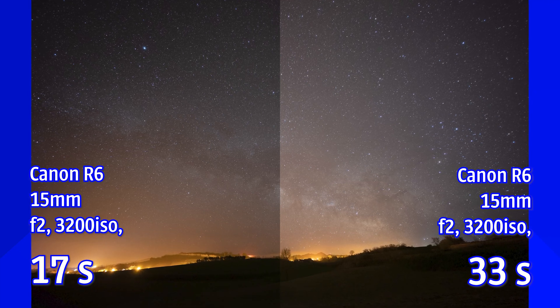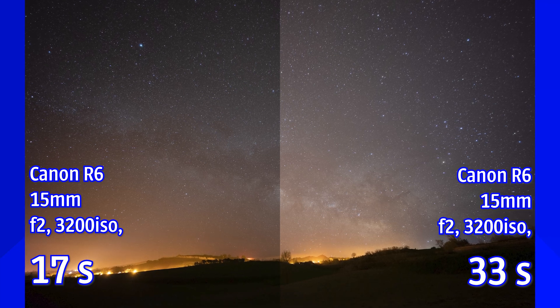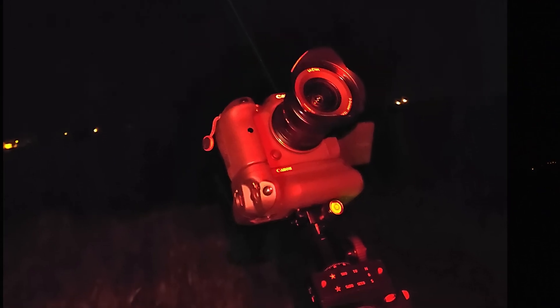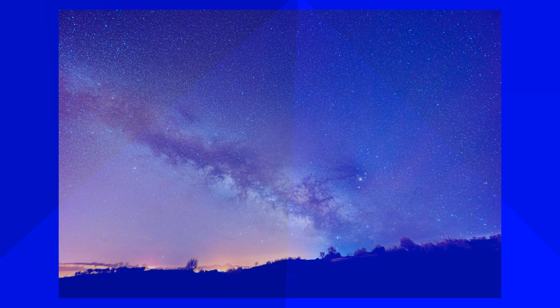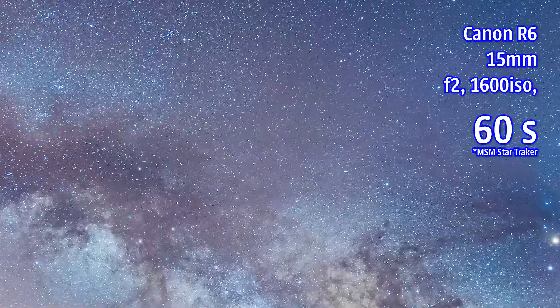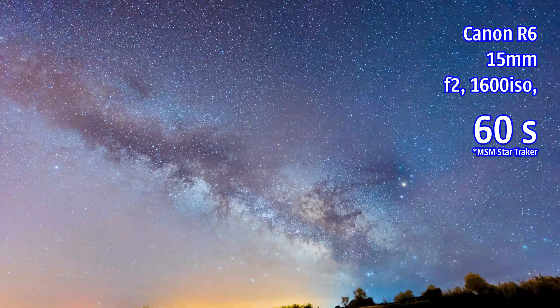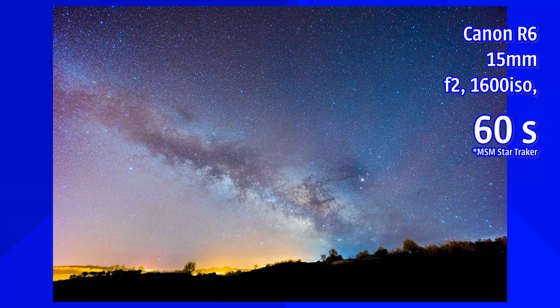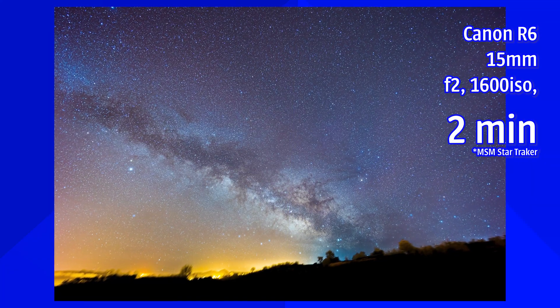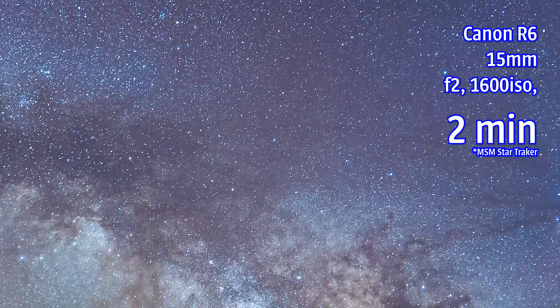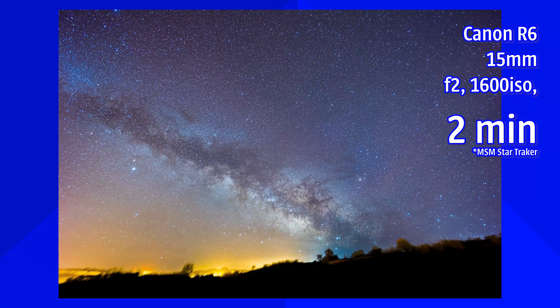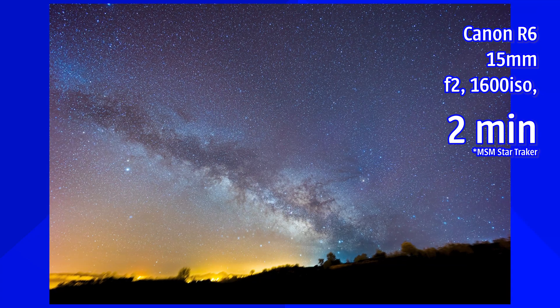Is there a better solution? Yes. The most observant of you may have noticed the camera is on a very unusual tripod head — a star tracker. A star tracker allows longer exposures beyond what the 500 rule or NPF rule permit. I made a one-and-a-half minute exposure with no star trails, then pushed to two minutes, after which star trails began to appear.